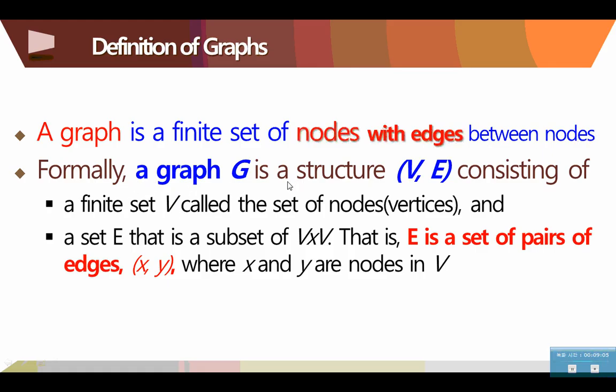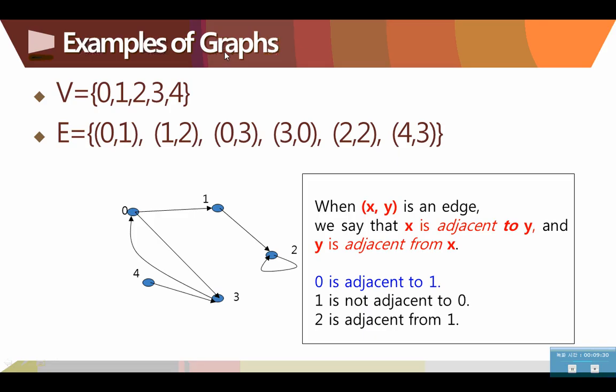Here is the definition of graphs. A graph is a finite set of nodes with edges between nodes. Formally, a graph G is a structure consisting of a finite set V called the set of nodes or vertices, and the set E, that is a subset of V by V. That is, E is a set of pairs of edges, XY, where X and Y are nodes in V. So, the graph consists of vertices and edges, located in this way.